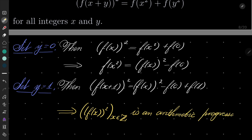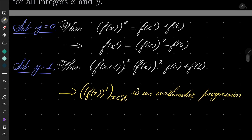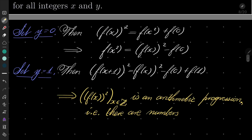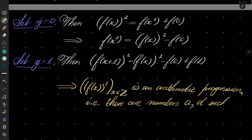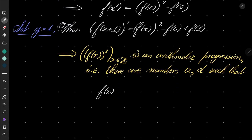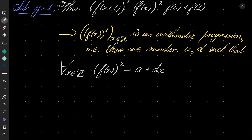So in other words, there are numbers a and d such that f of x squared equals a plus d times x for every integer x. But now let's consider the possible values of d. I claim that this number d must be zero.